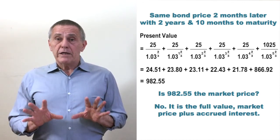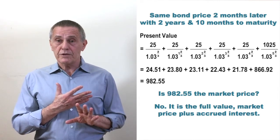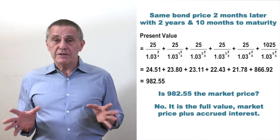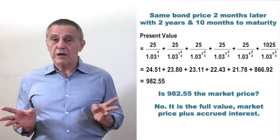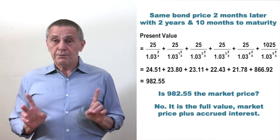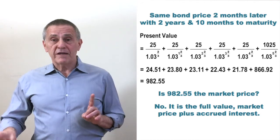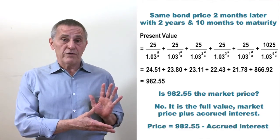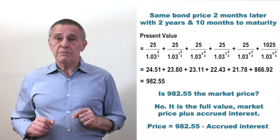So, if you have a bond quoted on a yield basis, as by implication this bond was, for trade settlement between coupon payment dates, you can't find the market price through the process we've just walked through. Through a completely separate methodology, we'd have to calculate the accrued interest. And once having calculated the accrued interest, subtract it from the present value of all the cash flows. And whatever the result would be, would be the market price.